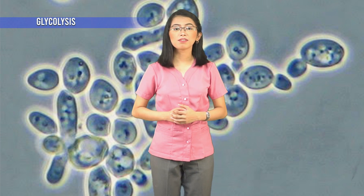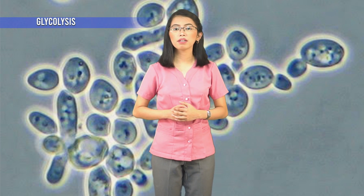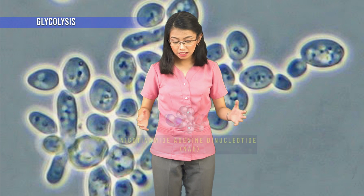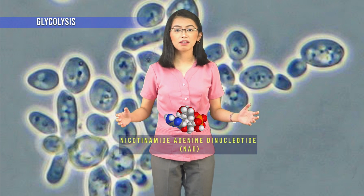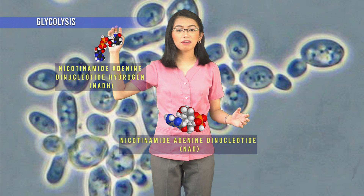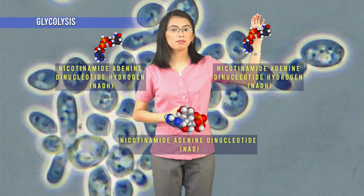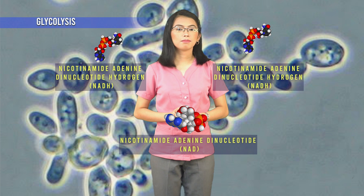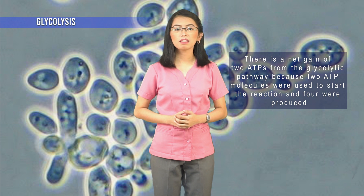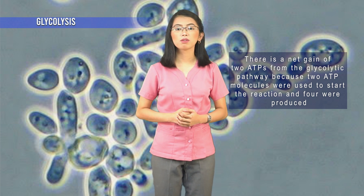During the process of glycolysis, some hydrogens and their electrons are removed from the organic molecules being processed and picked up by the electron transfer molecule NADH. There is a net gain of two ATPs from the glycolytic pathway because two ATP molecules were used to start the reaction and four were produced.